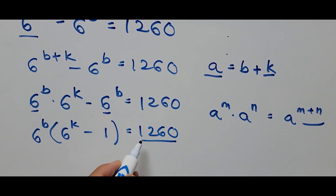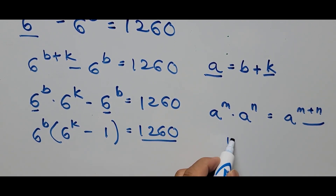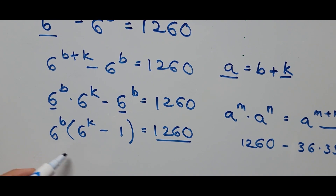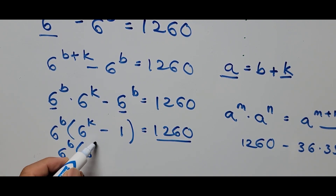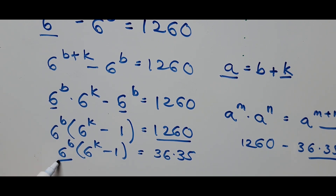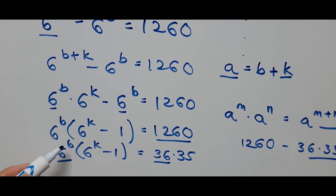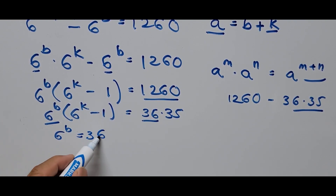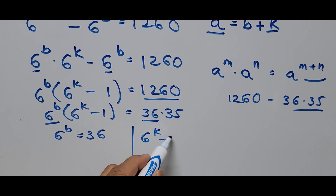Since we found the factors of 1260 are 36 and 35, we substitute: 6 to the power B times the quantity 6 to the power K minus 1 equals 36 times 35. By comparison, we equate 6 to the power B to 36, and 6 to the power K minus 1 to 35.